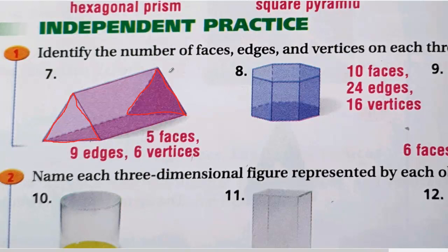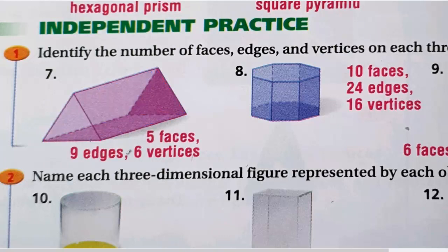Let's count the faces, vertices, and edges of the triangular prism. We have two bases; each base has three sides, so from each side we get one face — that gives us three side faces plus two bases, making five faces. For edges: each base has three edges, so three plus three is six, and the three side edges make nine edges total.